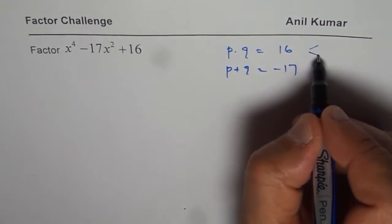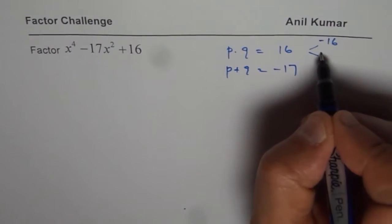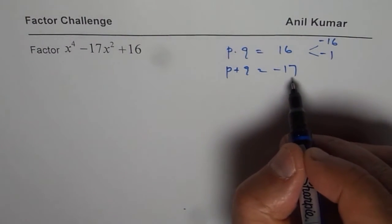Now the two numbers could be, both can be negative, so it could be minus 16 and minus 1. When you multiply you get plus 16, when you add you get minus 17.